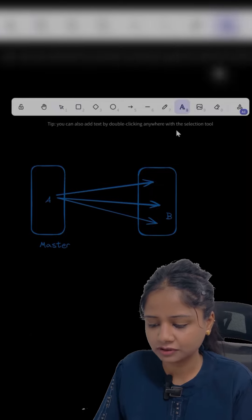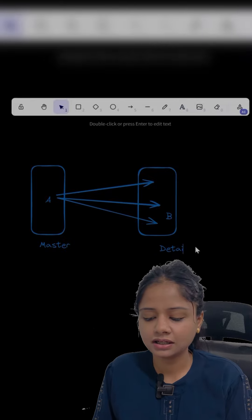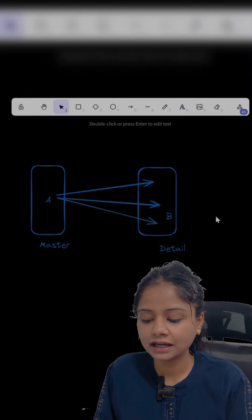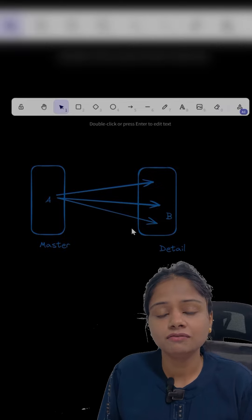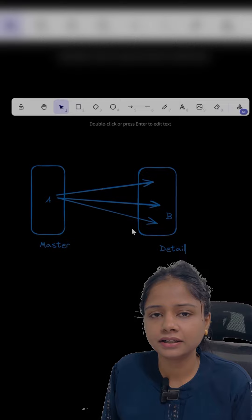One-to-many relationship - whenever you want to create and if you want that A and B should be tightly coupled, what is tightly coupled? If you are deleting the A, its related B also should get deleted.